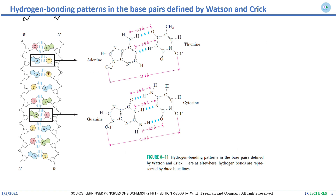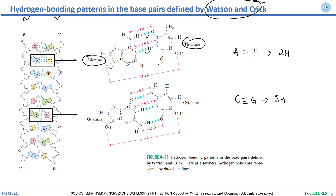Moving to hydrogen bonding, one of the most important aspects of the DNA structure given by Watson and Crick. Between adenine and thymine there are two hydrogen bonds, and between cytosine and guanine there are three hydrogen bonds. You can practice drawing these hydrogen bonds in your notebook, identifying which atoms are involved.